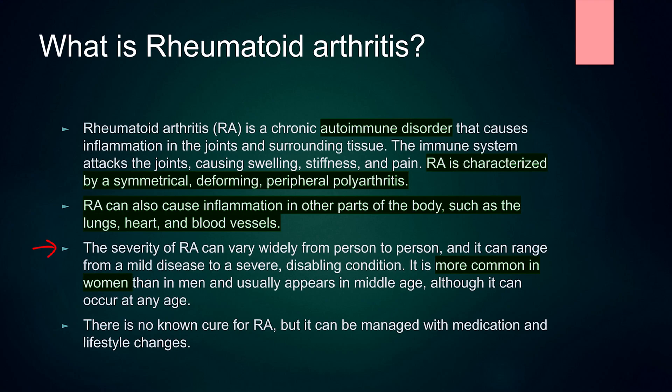The severity of rheumatoid arthritis can vary widely from person to person — it can range from a mild disease to a severe disabling condition. It is more common in women than in men and usually appears in middle age, although it can occur at any age. Most autoimmune diseases are more common in females than males.